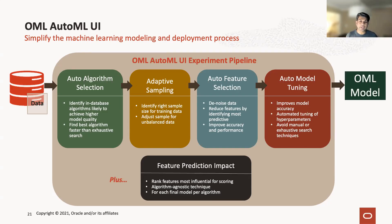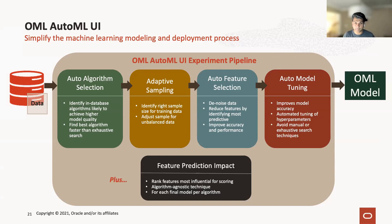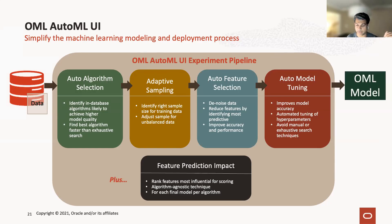This significantly improves the accuracy. The fewer features, the faster the model trains — because lesser data. If I have a SQL with 20 columns, it will take more time than a SQL with two columns, especially if it's column organized. That's what auto feature selection is.